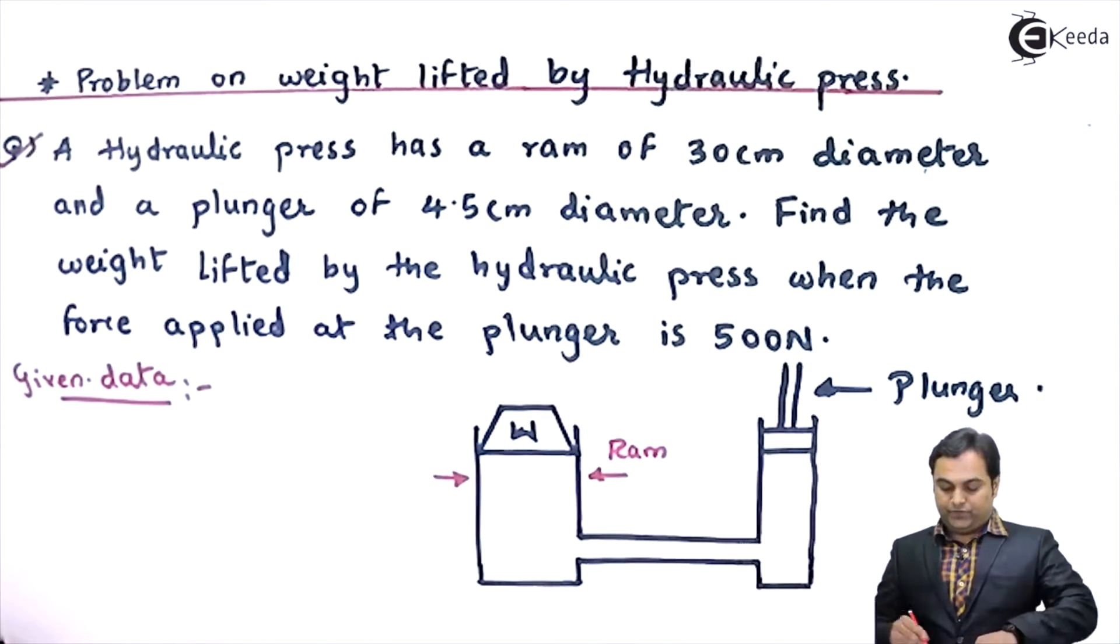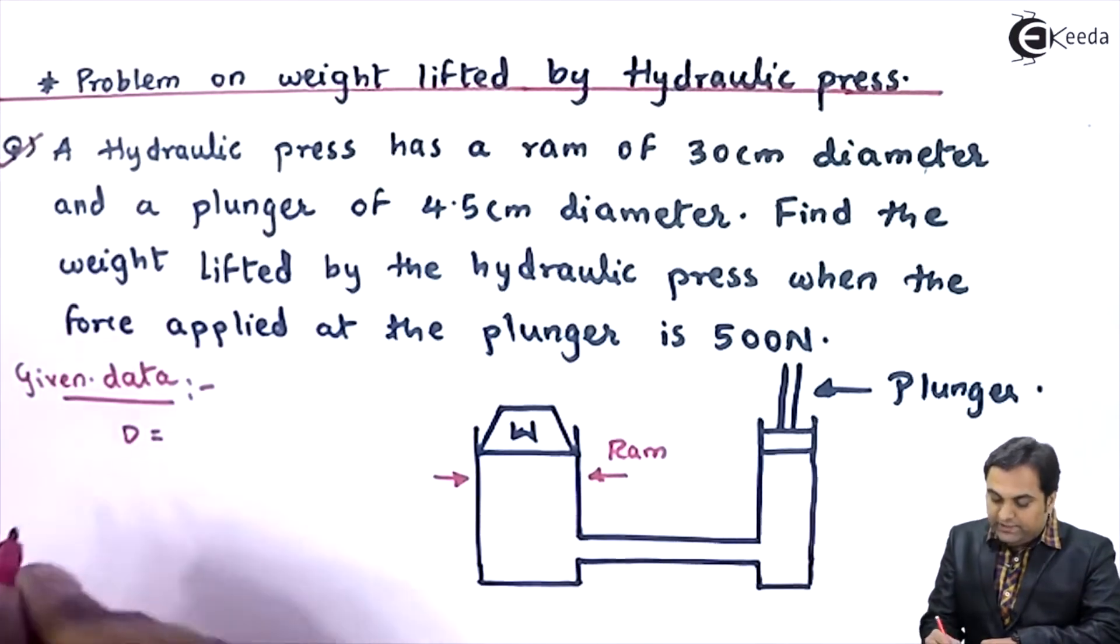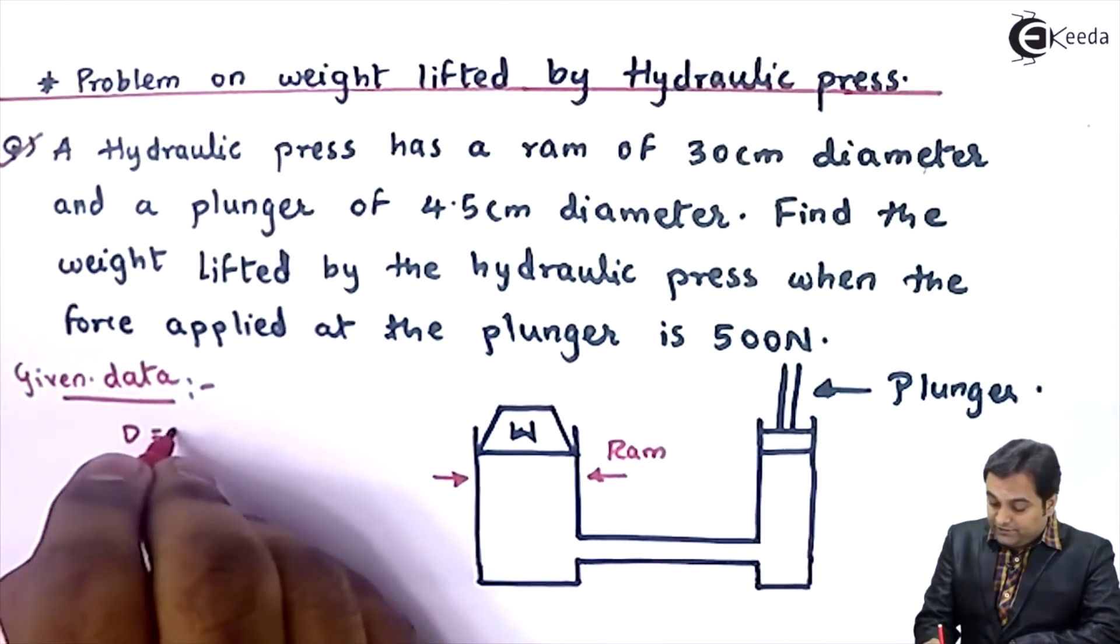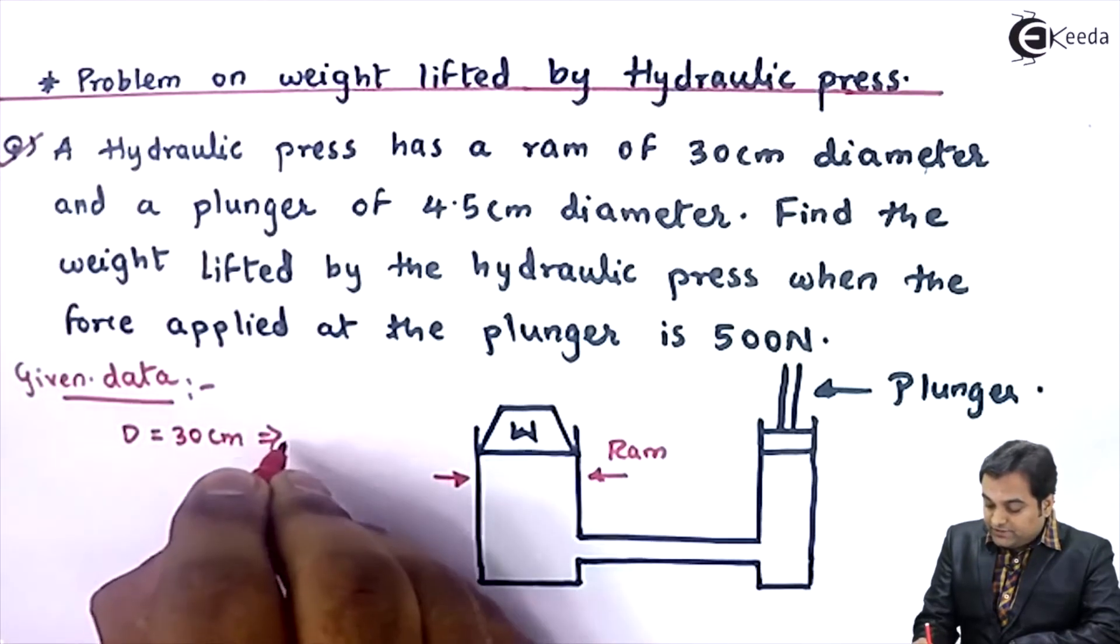The diameter is given as 30, so I'll denote RAM by capital D. The diameter is 30 centimeters or 0.3 meters.